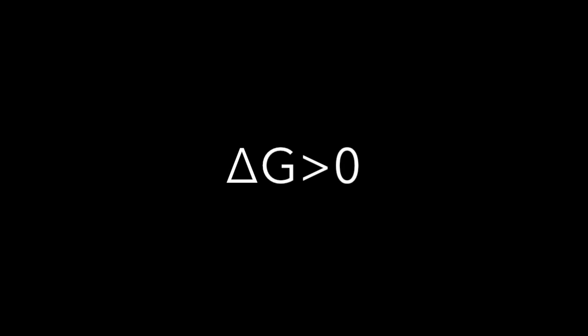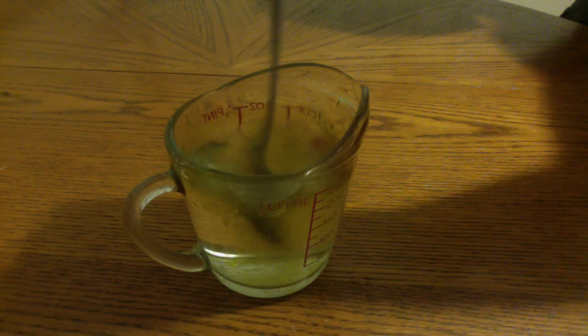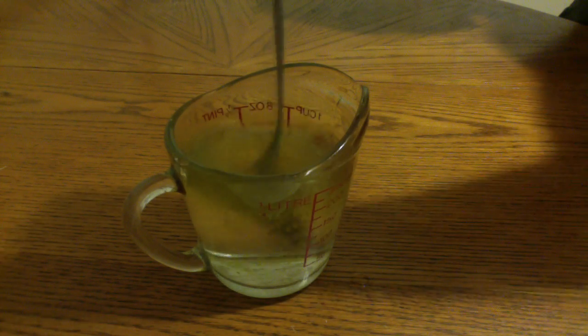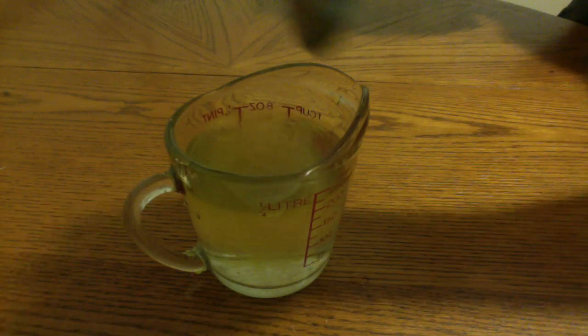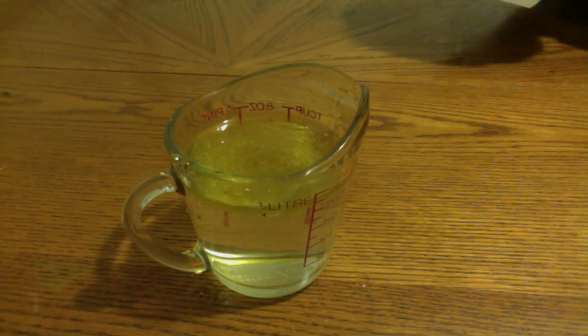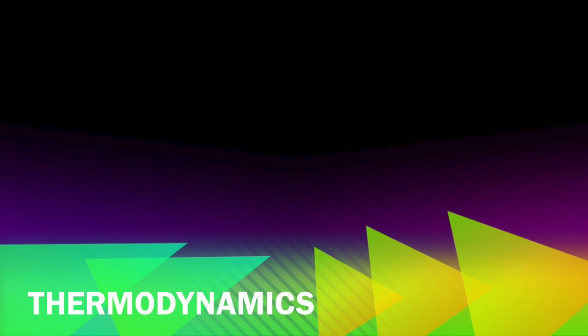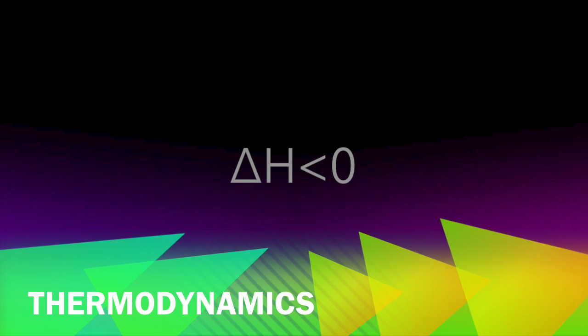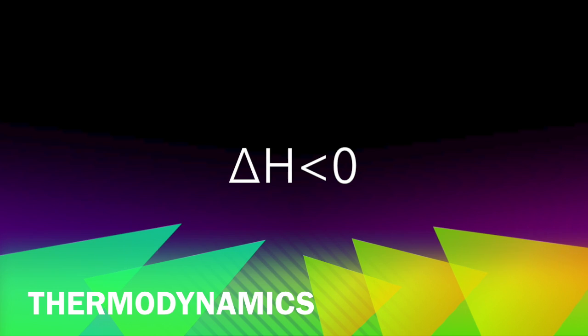Mixing oil and water in solution requires the change in free energy, delta G, to be greater than zero, which is what we observe when I put energy into the oil and water solution. Thermodynamically speaking, the change in enthalpy, delta H, is less than zero, and the process of mixing oil and water is therefore exothermic, yet endergonic.